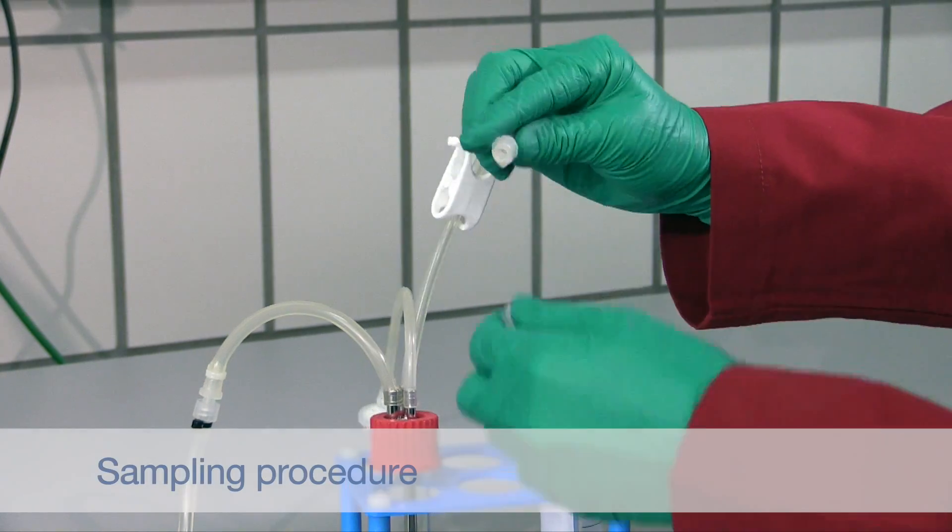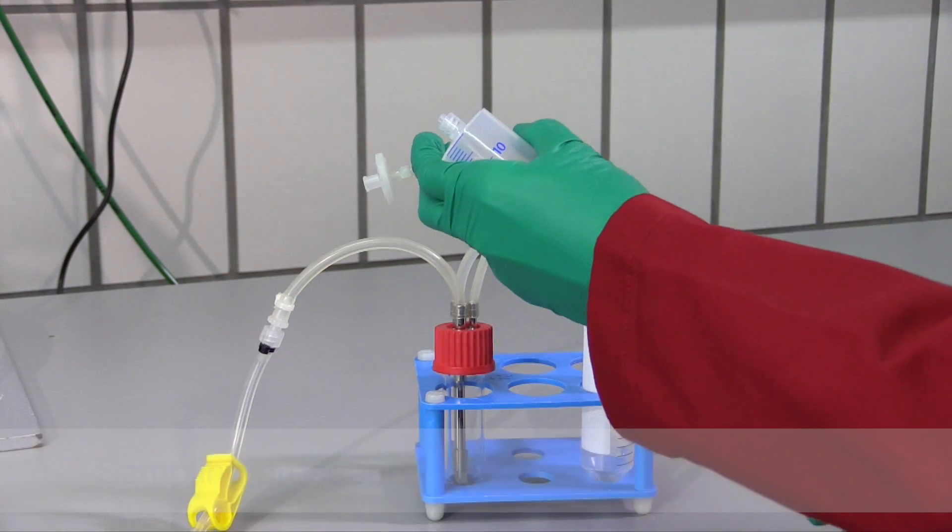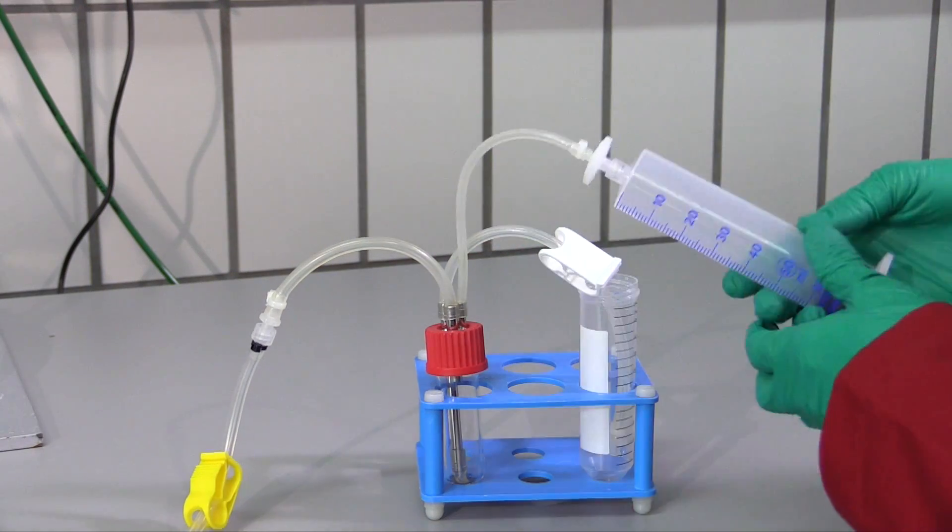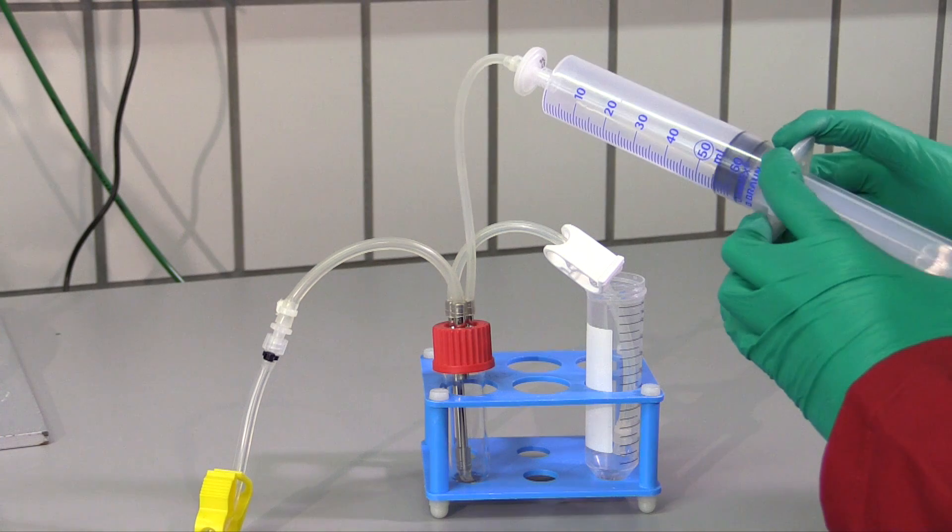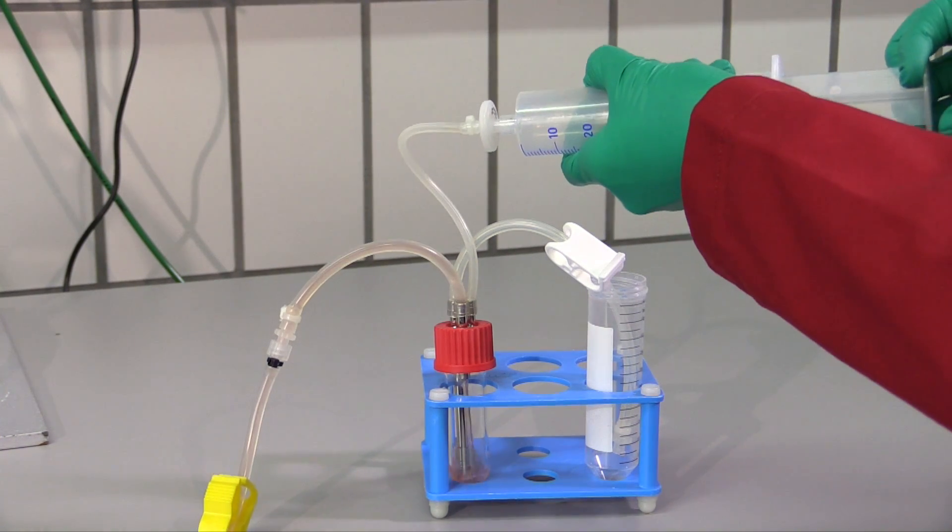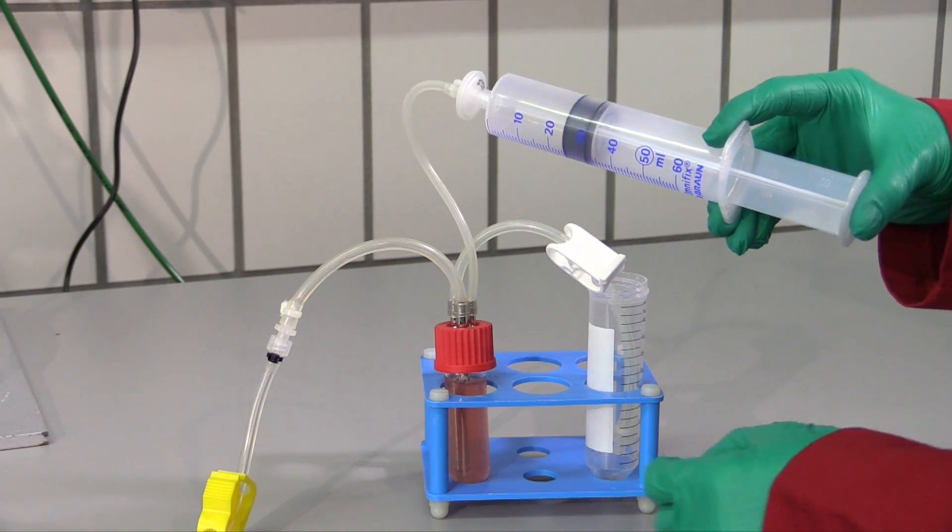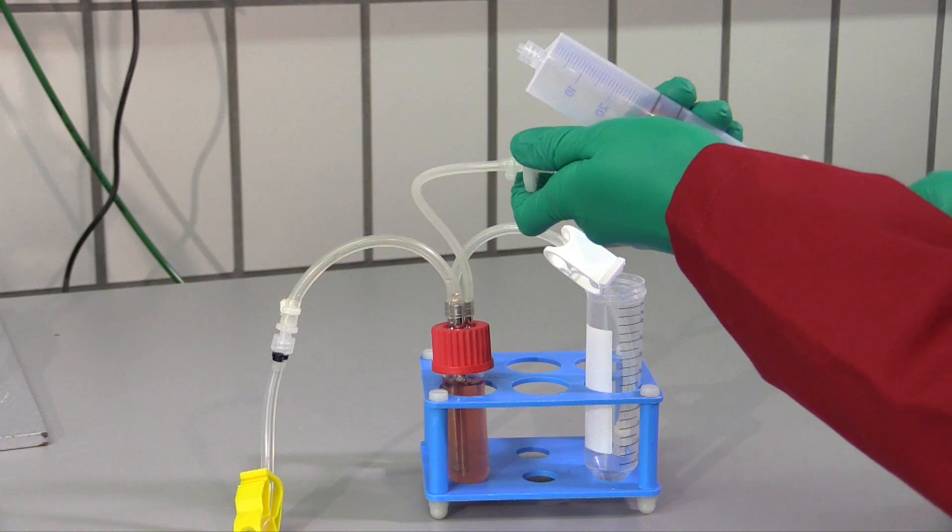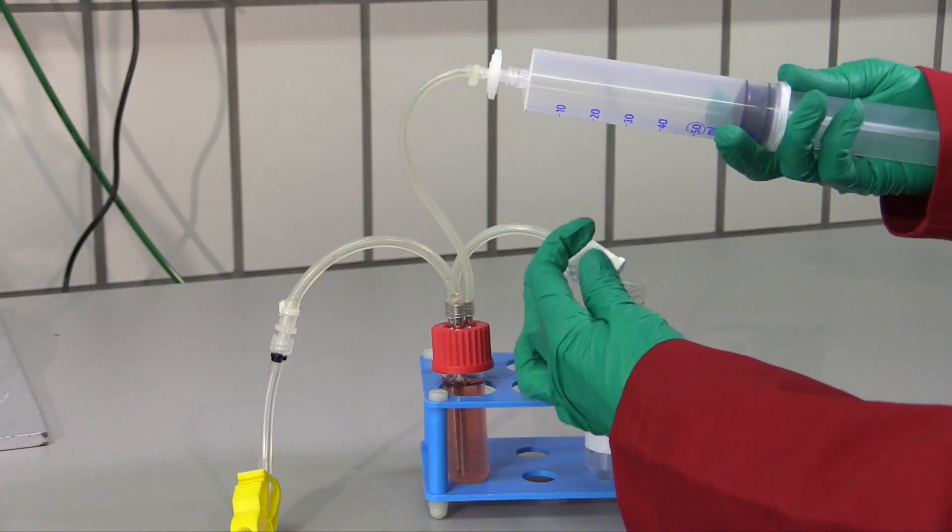For sampling, an external sampling device is used. A 50 ml syringe is filled with air and connected to the air filter of the sampling device. The clamp on the tube connected to the bioreactor is opened, the syringe is exhausted, and the microcarrier cell suspension immediately drawn up until the sampling device is completely filled. To transfer the sample from the sampling device to a falcon tube, the second clamp is opened and the syringe exhausted again.